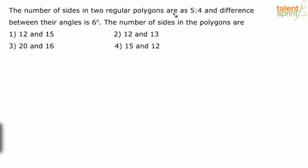The number of sides in two regular polygons are in the ratio 5:4, and the difference between their angles is 6 degrees. We need to find the number of sides in the polygons.